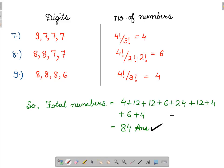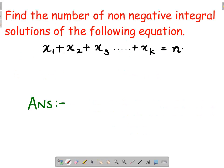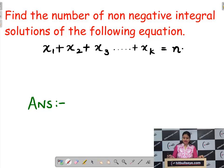Now, this is a very lengthy process. So do we have any shortcut or formula to do these kind of questions? Yes, we have actually. So let us see that shortcut. It is, find the number of non-negative integral solutions of the following equation. The equation is x1 plus x2 plus x3 so on up to xk equals n.